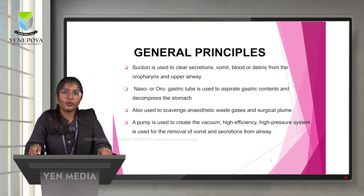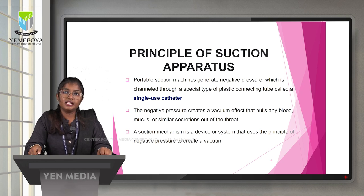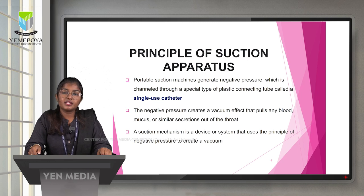A pump is used to create the vacuum. High-efficiency, high-pressure systems are used for the removal of vomit and secretions from the airway. Portable suction machines generate negative pressure, which is channeled through a special plastic connecting tube called a single-use catheter. The negative pressure creates a vacuum effect that pulls blood, mucus, or similar secretions out of the throat.